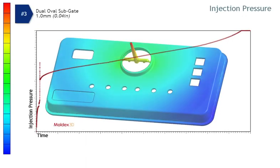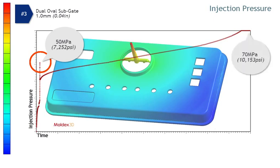Finally, the pressure requirement graph for the dual round sub-gate with the largest gate size of 1 mm indicates a much smaller pressure spike of about 50 MPa. The required injection pressure has also dropped to about 70 MPa.